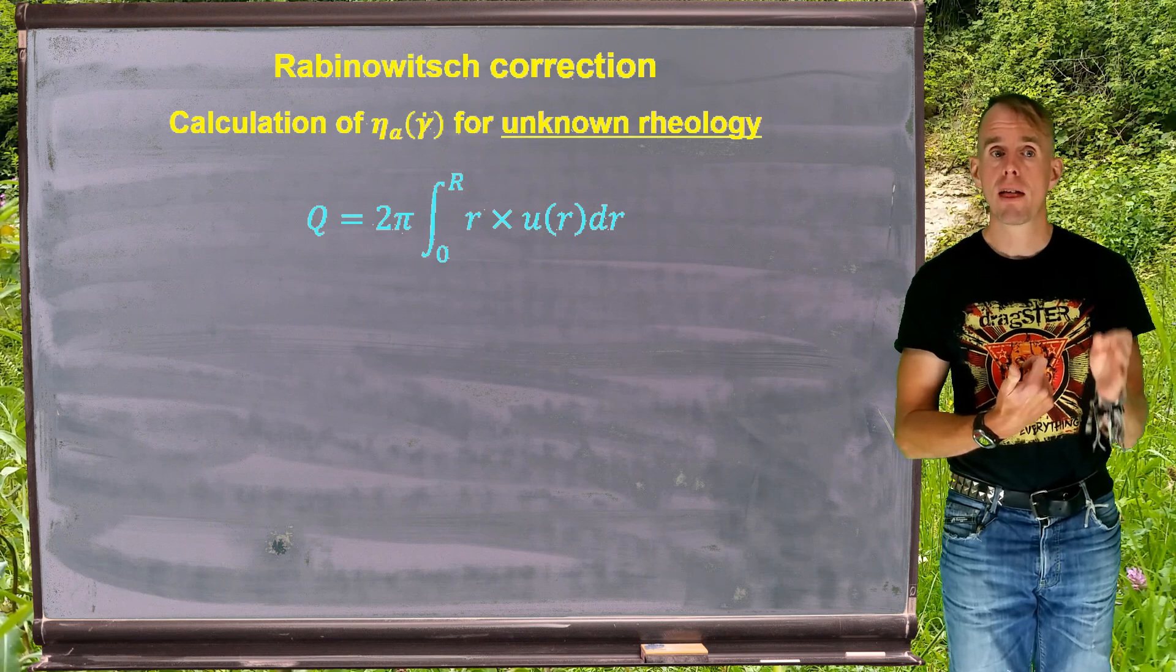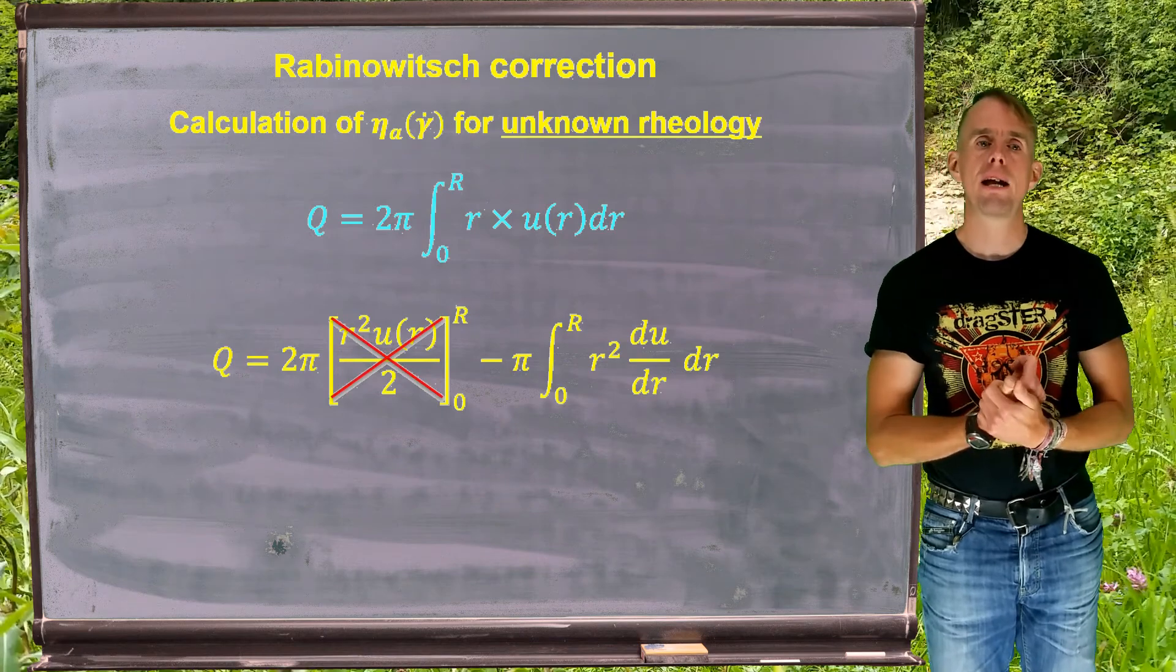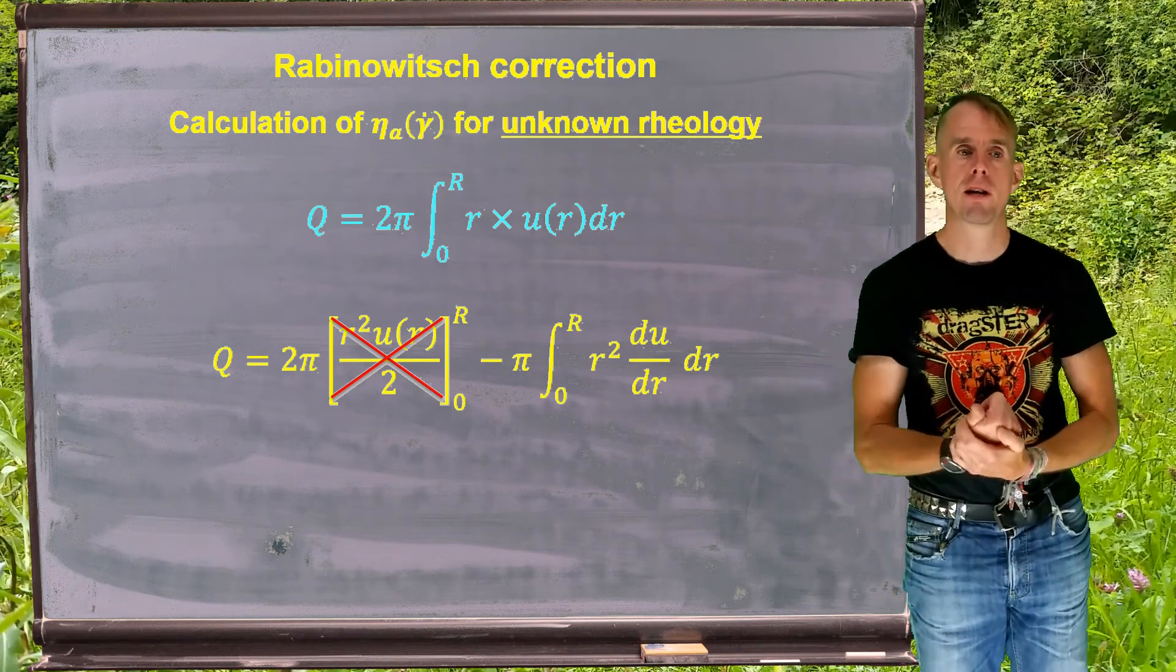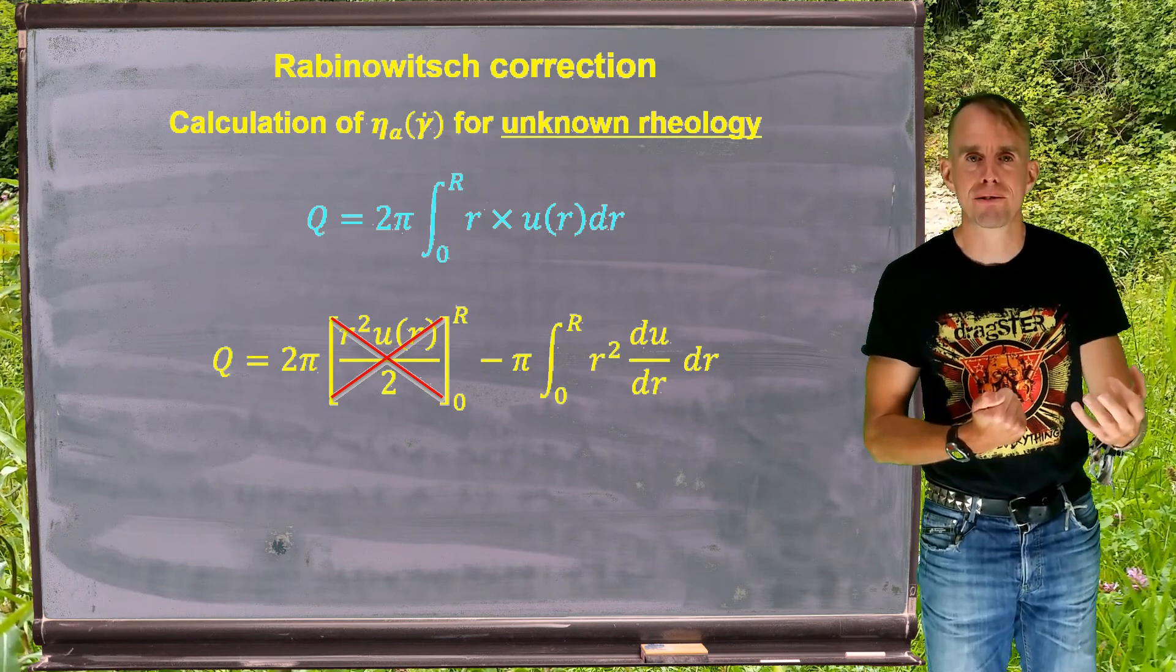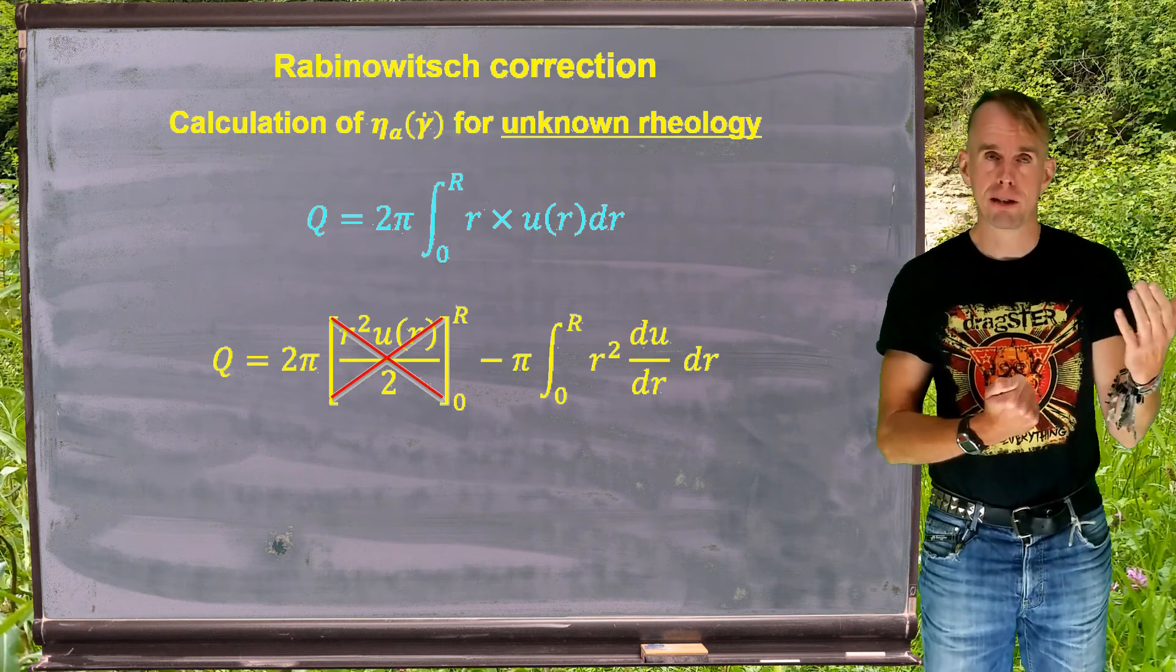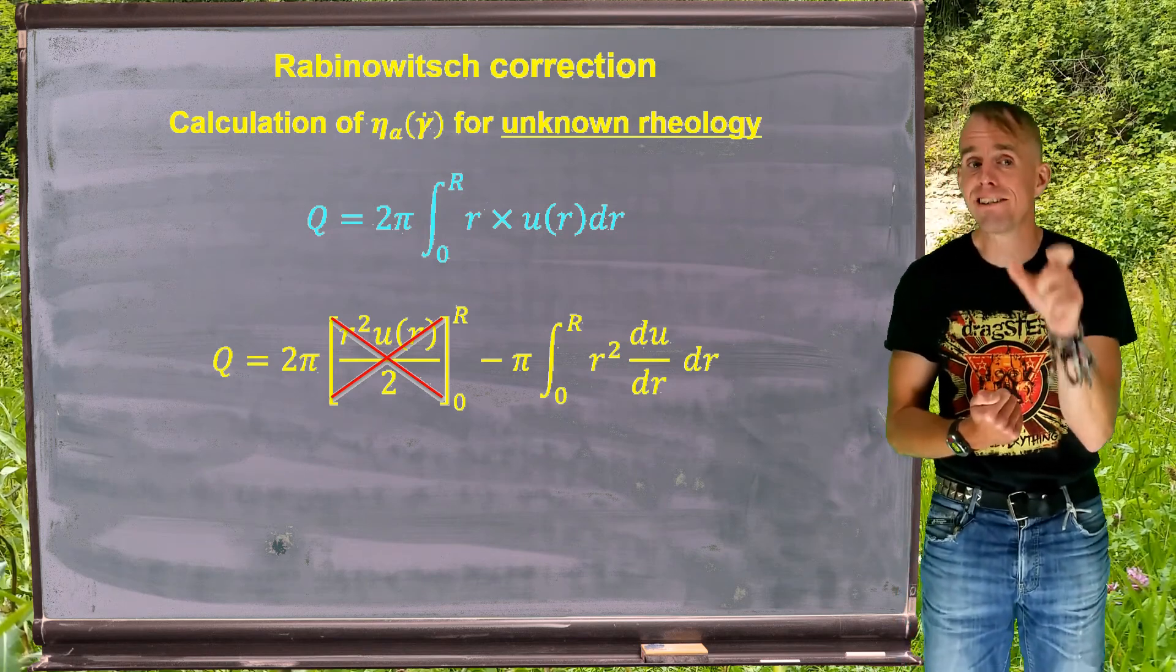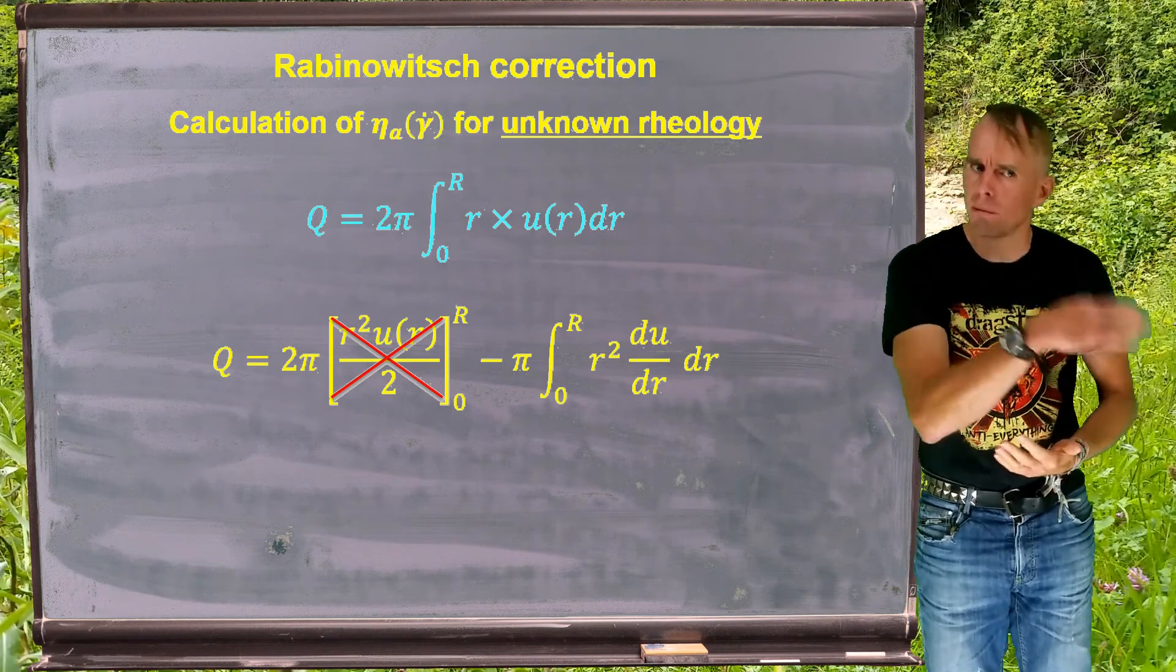It's simply the integral shown on the blackboard there, Q equals 2π integral from 0 to R of r times u(r) dr. We've used this a lot on the caveat that we know the velocity field, which we've typically obtained by assuming a constitutive law. We can't do that now because knowing a velocity field means you've already assumed a rheology. So u of r is unknown. But we can still integrate this. We need to do it by parts.